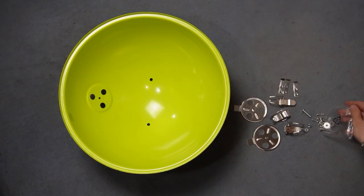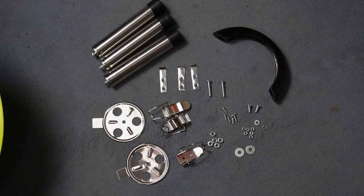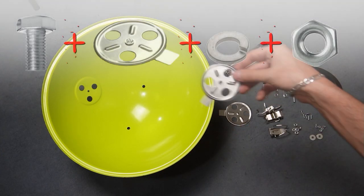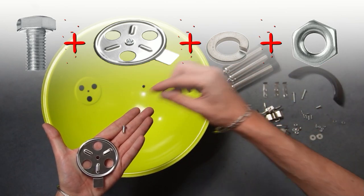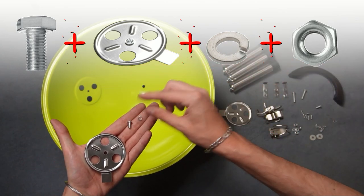Now arrange all the small parts next to the barbecue. You can see them up close. First let's install the ventilation cover on the lid. Take the vent cover, one of the short bolts, a split washer, and one of the big nuts.